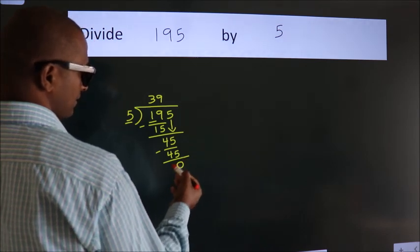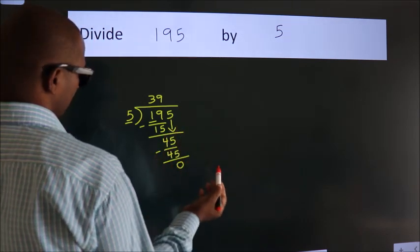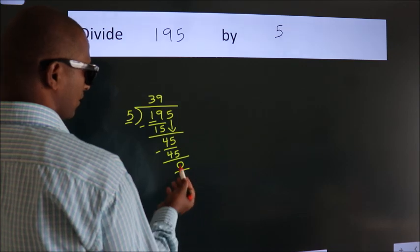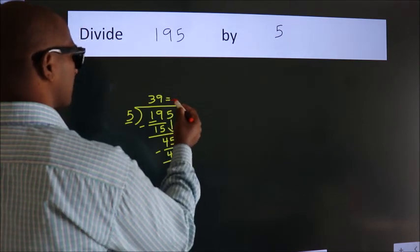After this, no more numbers to bring it down. And we got remainder 0. So, this is our quotient.